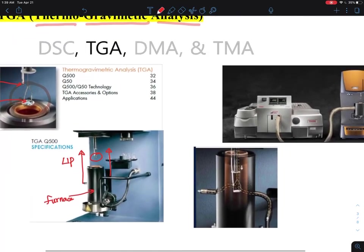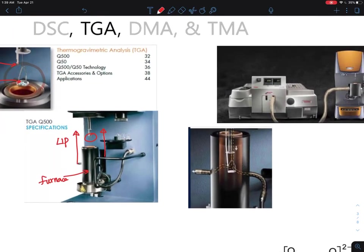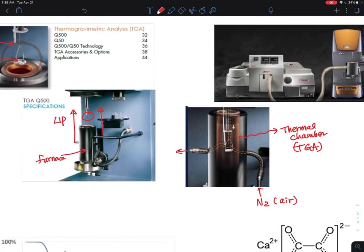So once you seal that, this thing, the gas can go in and out. And this is either nitrogen gas or air can be used, and this is essentially thermal chamber, TGA instrument. So essentially you are putting your sample in a little furnace.